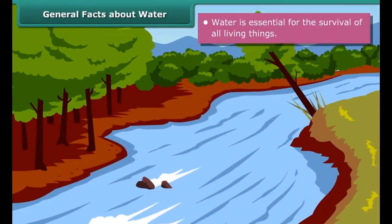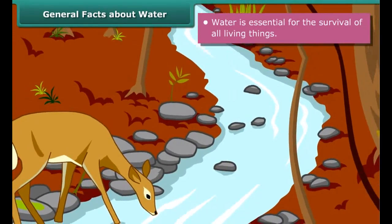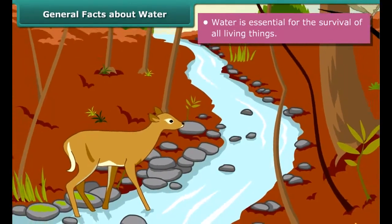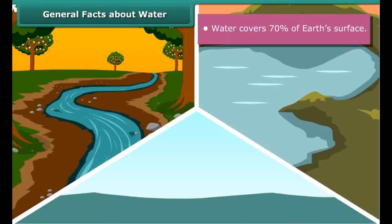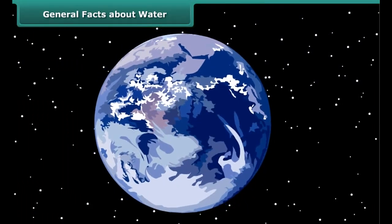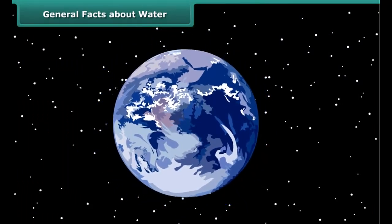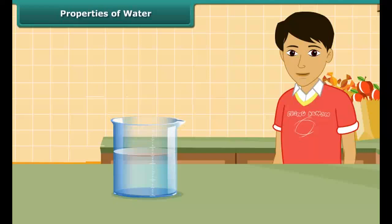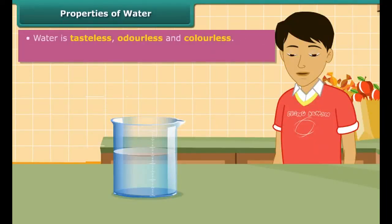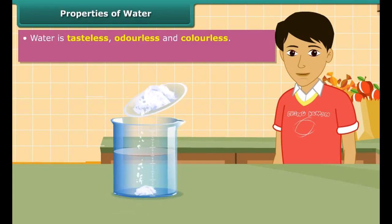Water is essential for the survival of all living things — plants, animals, human beings and other life forms. It covers 70% of our planet in the form of rivers, ponds, oceans and streams, making earth appear blue in color when seen from space. In fact, the abundance of water has earned earth the sobriquet 'blue planet.'